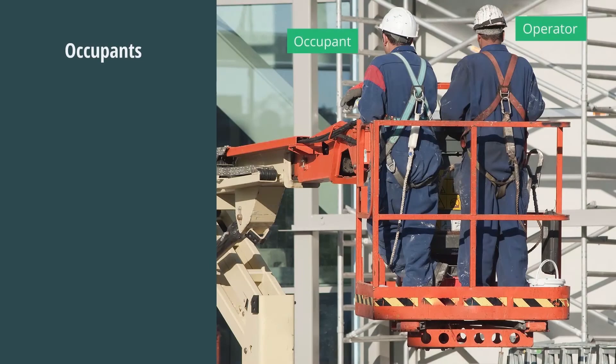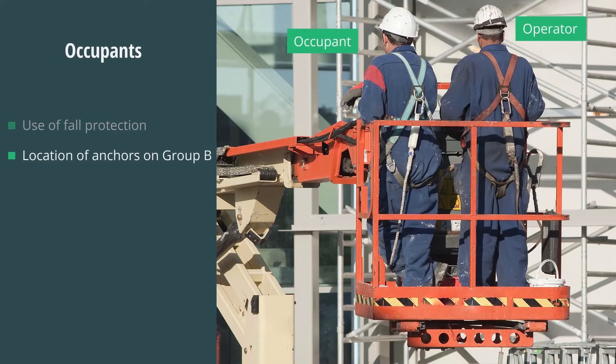Occupants must understand the requirement to use fall protection and the location of fall protection anchors on a Group B device. They need to understand how their actions can affect the stability of the unit.